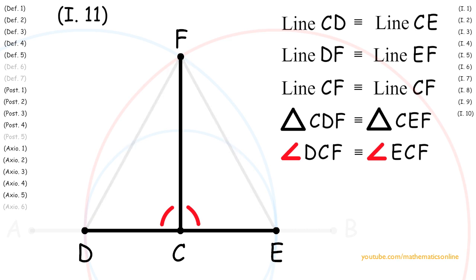And now since the straight line CF is on top of the straight line DE, making both adjacent angles congruent, then by Definition 4, both angles must be right angles. And therefore line CF is perpendicular to line AB.